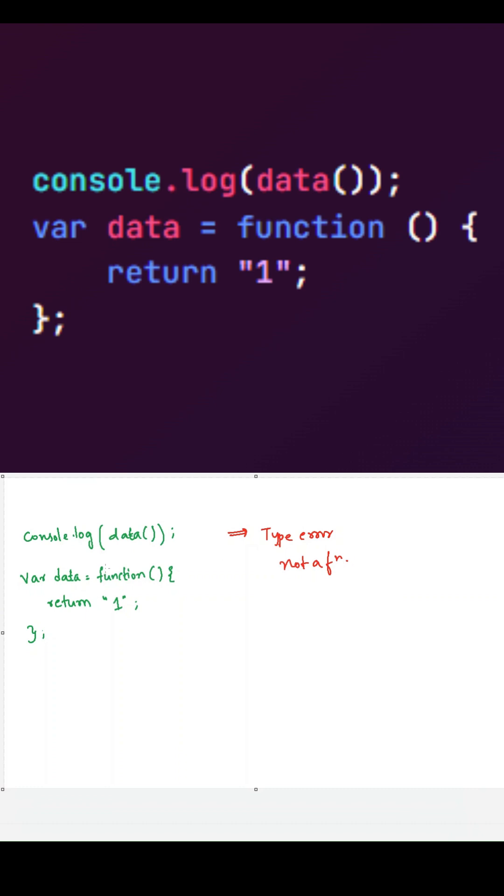Here we are assigning an anonymous function to the variable data which is declared with var declaration. In JavaScript, whenever we are declaring the variable with var declaration, then JavaScript will hoist it to top of its scope and it will be initialized with the value of undefined.